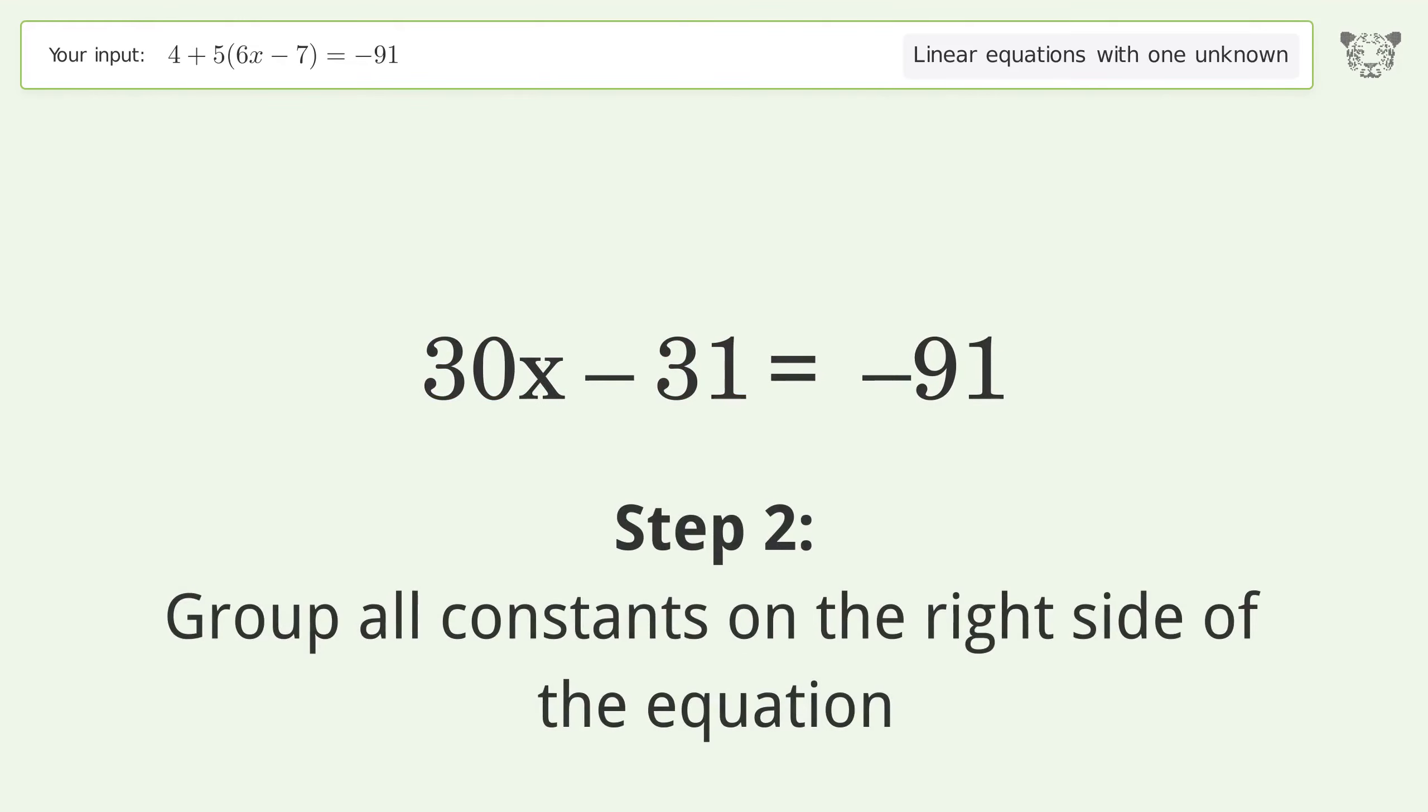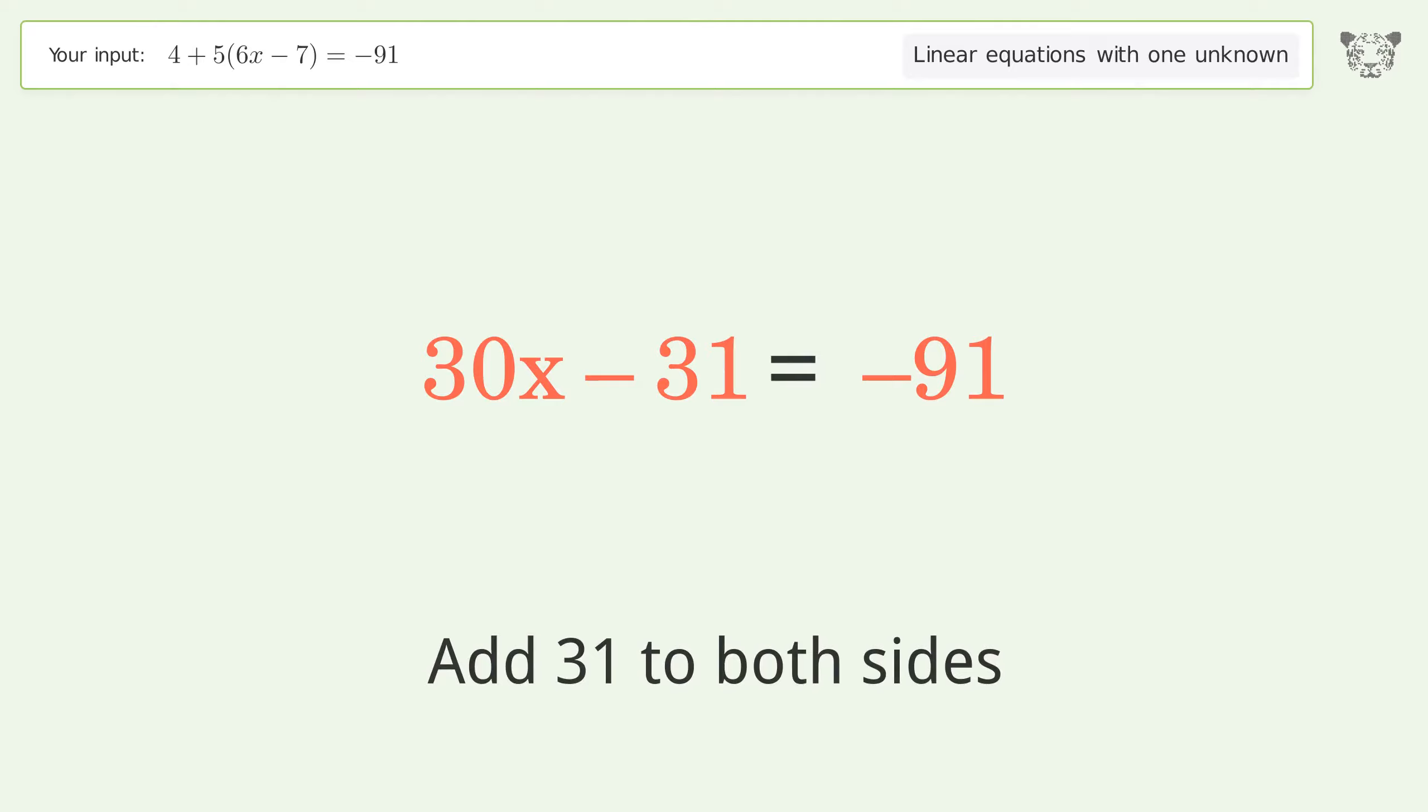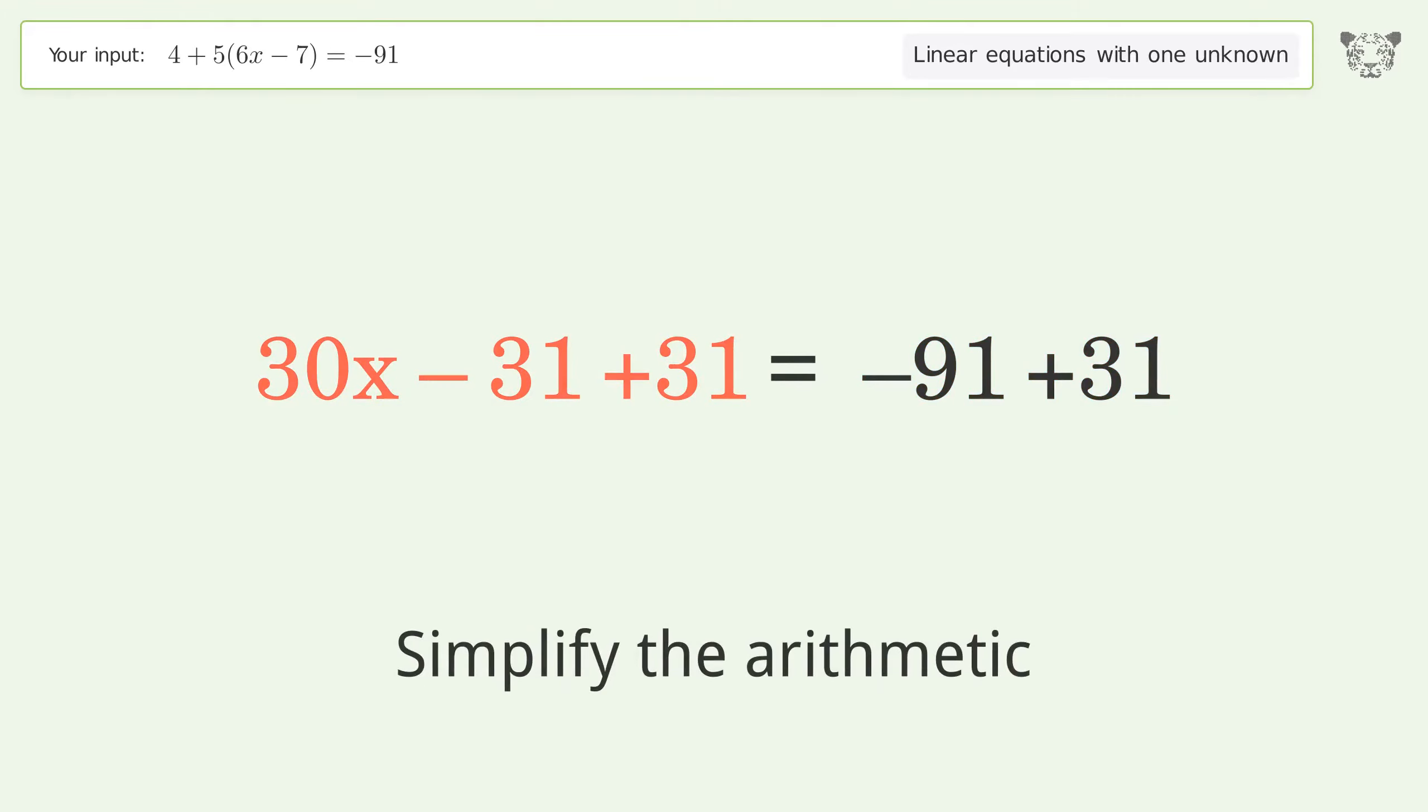Group all constants on the right side of the equation. Add 31 to both sides. Simplify the arithmetic.